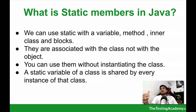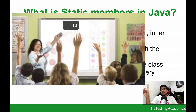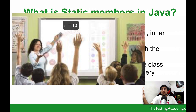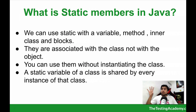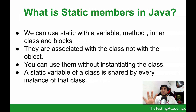Let me give you a very simple example of what static means. Suppose there is a board and a teacher writes 'a = 30' on it. There are 30 students looking at it. Suppose one student changes the number to 'a = 20' — now everyone sees that change. That's basically what static members are: they are shared across everyone. Without creating an object, everyone can access and use them, and if anyone changes the value, the change is reflected for everyone.